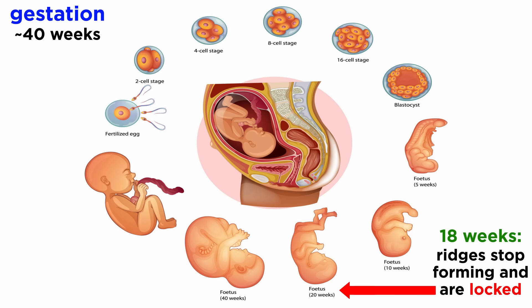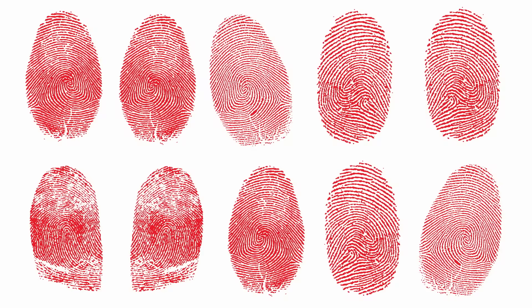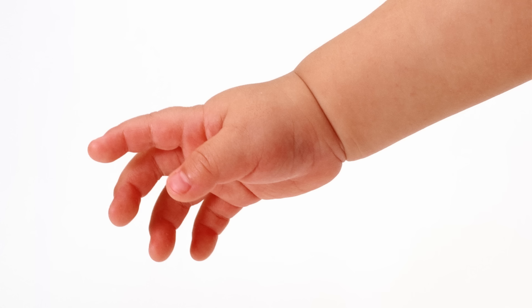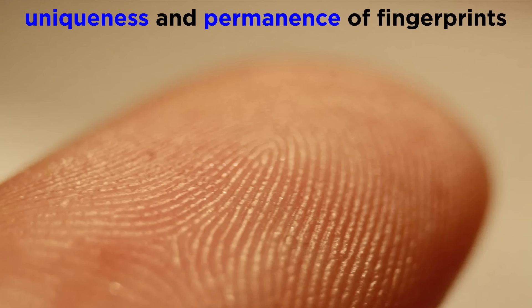It is only after 18 weeks of gestation that new ridges stop forming, and the ridge configuration gets locked for a lifetime, giving a human their own set of unique fingerprints and footprints. It's true that human limbs keep on growing even after birth, but the ridges remain the same, as their proportional relationship remains constant until death. With that, we have covered how two of the most important considerations for using fingerprints in forensic science come into being: their uniqueness and permanence.